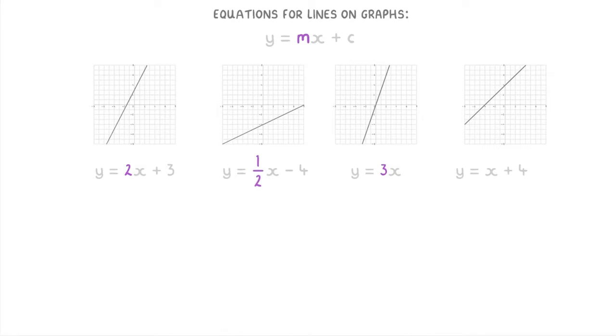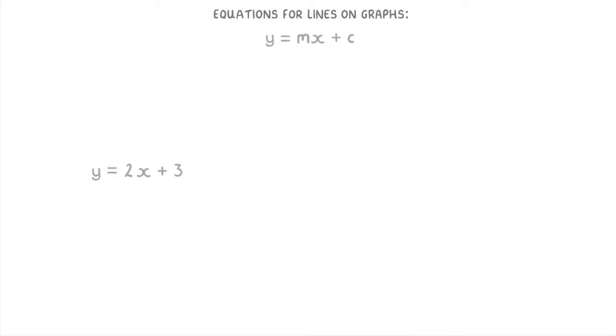The important things to know about this form are that m is the gradient of the line, which is a measure of how steep the line is, and c is the y-intercept, which is the point where the line crosses the y-axis.